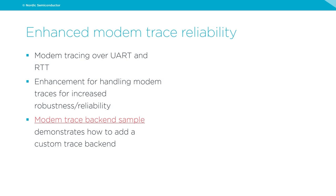The enhanced modem trace reliability provides modem tracing over UART and RTT with enhancements for handling modem traces for increased robustness and reliability. We have a modem trace backend sample demonstrating how to add a custom trace backend — this enables you to extract traces from the device in other ways. For example, if customers want something other than UART or RTT, they can implement a backend to store traces on an SD card. The trace backend uses a dedicated thread for this.